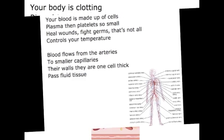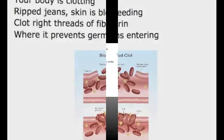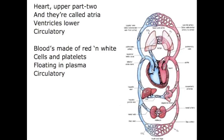To pass through with tissue, your blood is clotting — ripped jeans, skin is bleeding — flat white threads of fiber. The heart separates from the veins: upper part two, and they're called atria; ventricles lower.